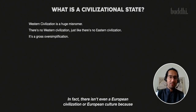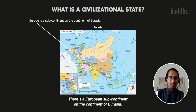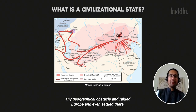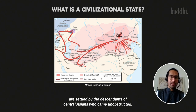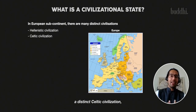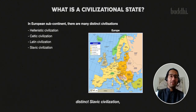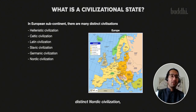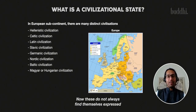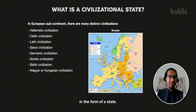In fact, there isn't even a European civilization or European culture, because there isn't a continent called Europe. There's a European subcontinent on the continent of Eurasia — we know it's one continent because the Mongols came without any geographical obstacle and raided Europe and even settled there. What you do have in the European subcontinent are distinct Hellenistic, Celtic, Latin, Slavic, Germanic, Nordic, Baltic, and Magyar or Hungarian civilizations. These do not always find themselves expressed in the form of a state, but some of them do.